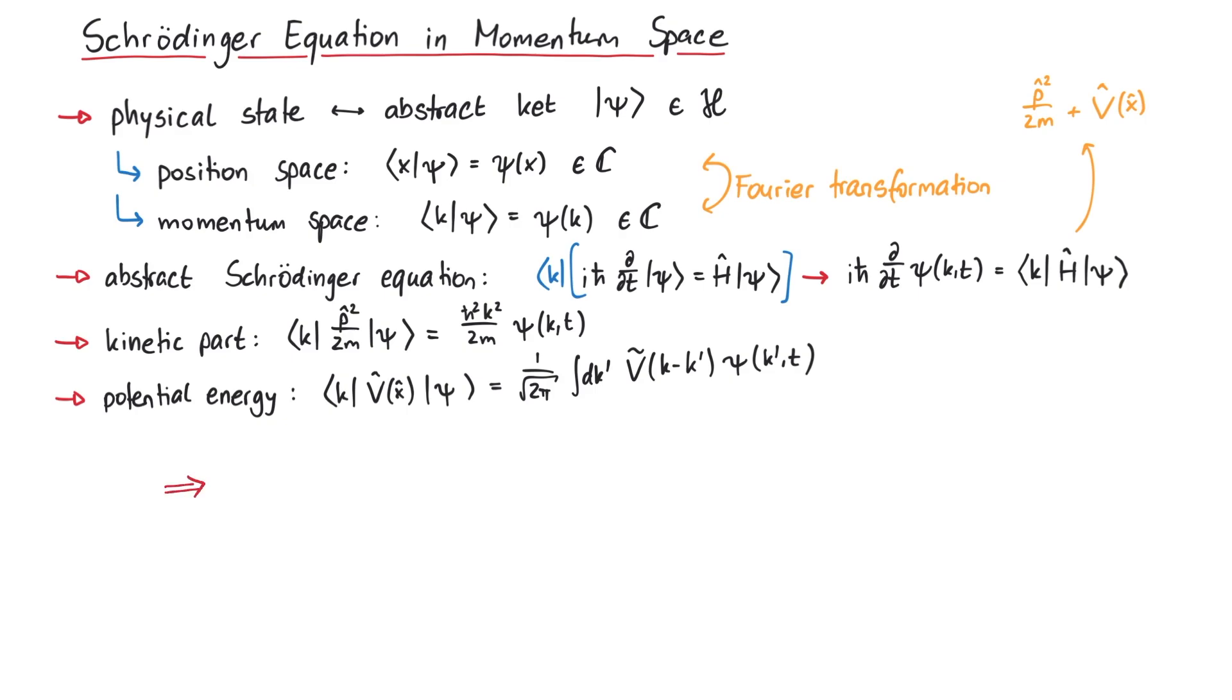Putting everything together, we get the Schrödinger equation in momentum space: i h-bar times the time derivative of psi tilde of k and t is equal to h-bar squared k squared over 2m psi tilde of k t plus 1 over the square root of 2pi times the integral over k-prime v tilde of k minus k-prime and the wave function psi tilde of k-prime t.